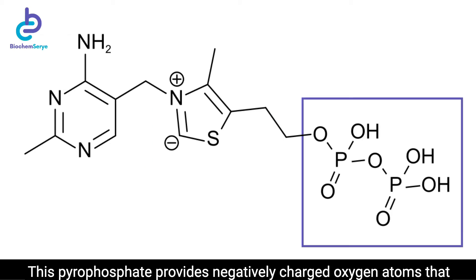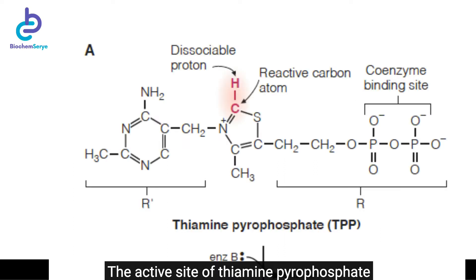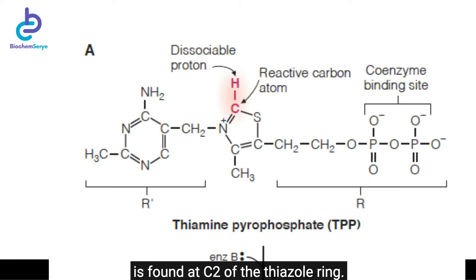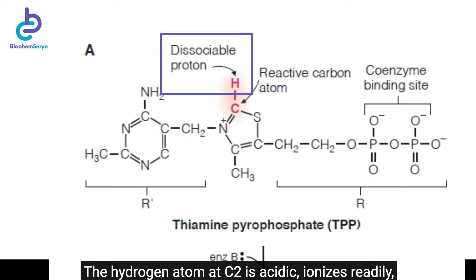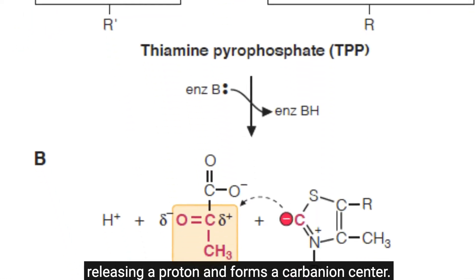This pyrophosphate provides negatively charged oxygen atoms that chelate magnesium ions, which then bind tightly to the enzyme. The active site of thiamine pyrophosphate is found at C2 of the thiazole ring. The hydrogen atom at C2 is acidic, ionizes readily, releasing a proton, and forms a carbanion center.